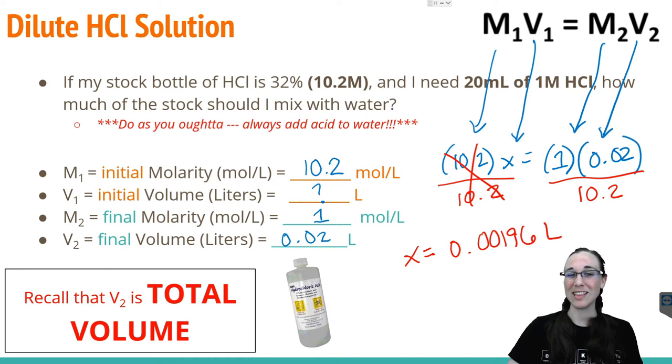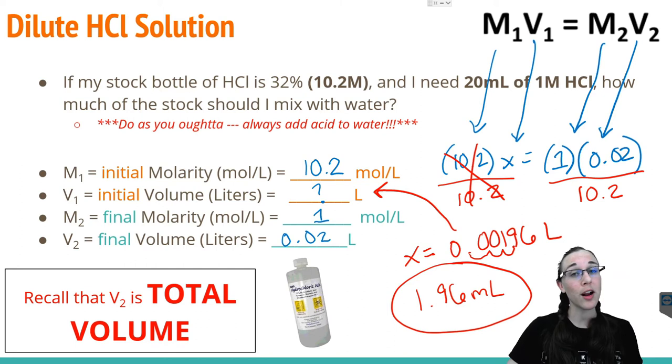Now, of course, we don't want to measure that out in liters, so it only makes sense that we would actually convert that back to milliliters for lab purposes. So we're just going to move that decimal over one, two, three, and we see that we actually need 1.96 milliliters of our stock 10.2 molar HCl. So we know we need 1.96 milliliters of our 10.2 molar hydrochloric acid from the stock bottle, and we're going to mix that with a certain amount of water. But how much water do we need in the lab?